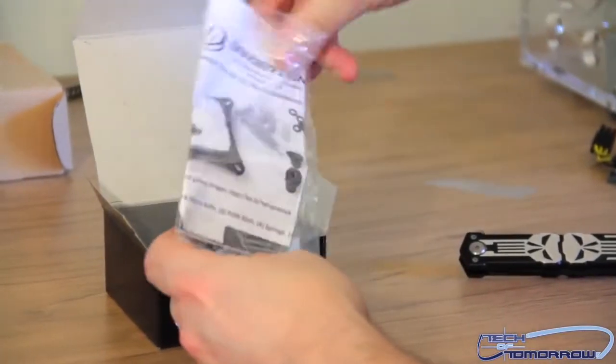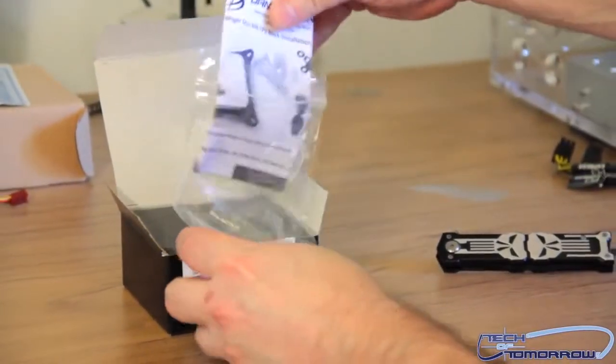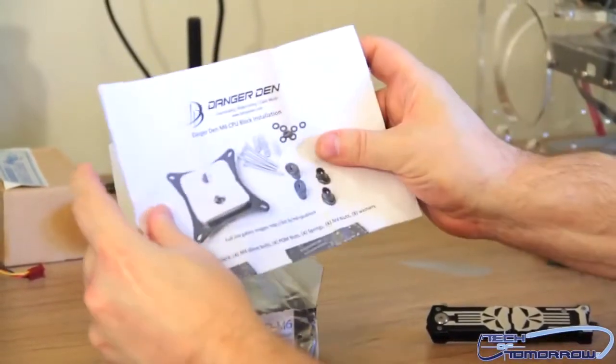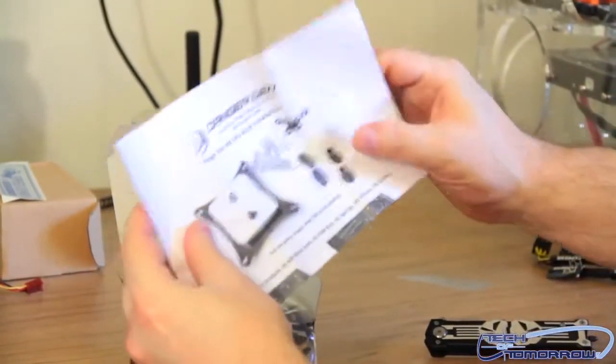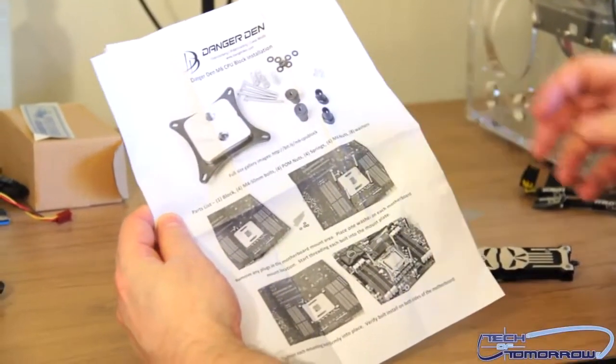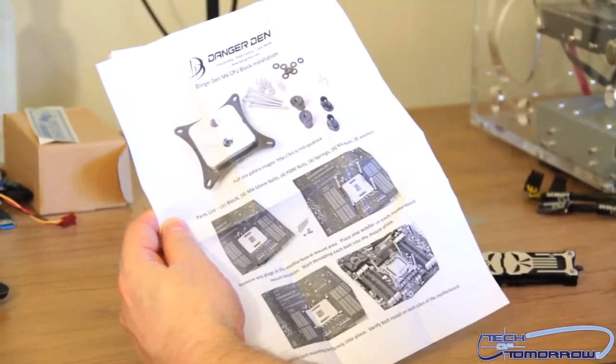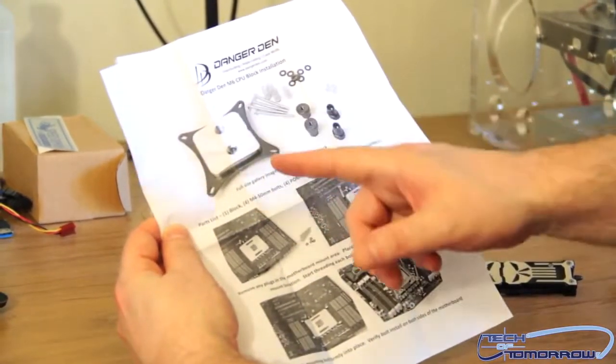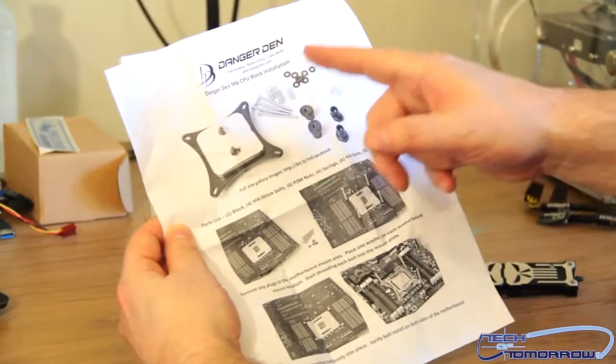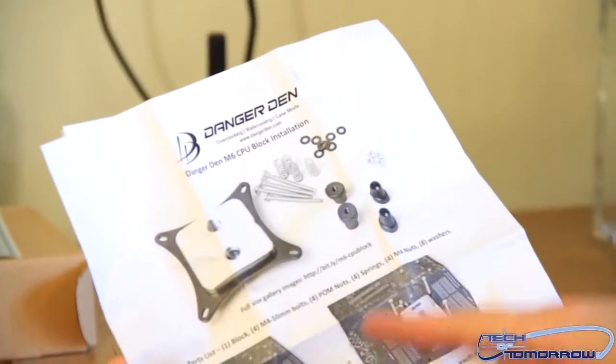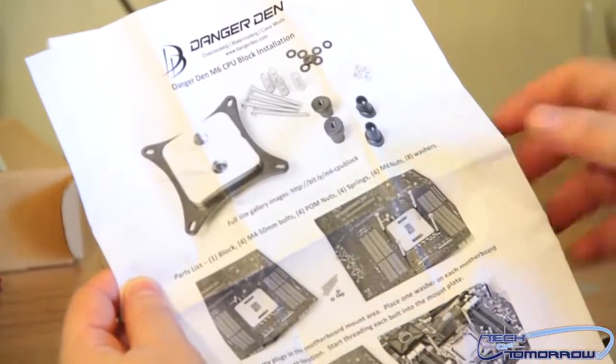This is their instruction manual. I've heard good things about this company. I'm really looking forward to working with them. This is going to be the replacement actually for one of the things we're using at Test Lab. Our 2011, we have the basic Intel retail one that came with it. We want to move past that and try some others. And the first company we thought of right now is Danger Den. So this is the Danger Den M6 CPU block installation guide. Has a lot of different images. Shows you how to do it. Looks pretty straightforward.